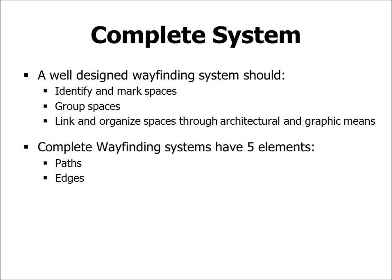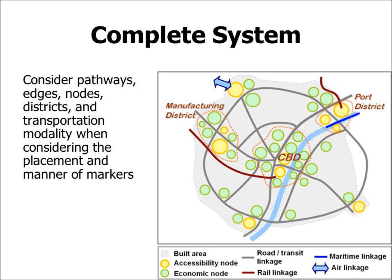The five elements include: edges, which are boundaries between districts or city limits; nodes, which are intersections or centers of economic activity; districts, which are areas of your community identifiable by certain characteristics; and markers, which could be wayfinding elements, buildings, architectural cues, geographic features, or even vegetation and landscaping. It is important to consider pathways, edges, nodes, districts, and transportation modality when placing wayfinding markers.